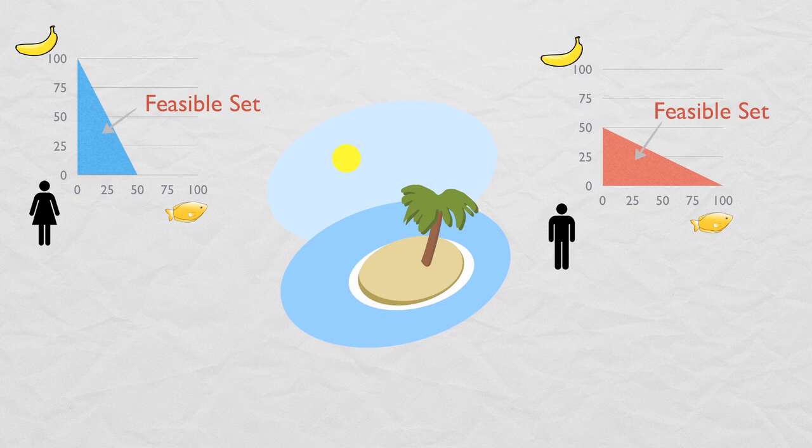The second person on the island, let's call him Gilberto Rahul, has different skills from Jane. He can pick fifty bananas if he spends a hundred percent of his week picking bananas or he can catch a hundred fish if he spends a hundred percent of his week catching fish.